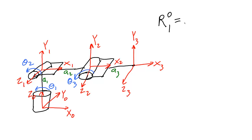In order to create this rotation matrix, the first thing we do is we try to figure out how we could rotate frame zero to match frame one. We do this the same way we learned in the previous video. I first look to see if there are any axes that match between frame zero and frame one. I see that axis x-zero is in the same direction as axis x-one.